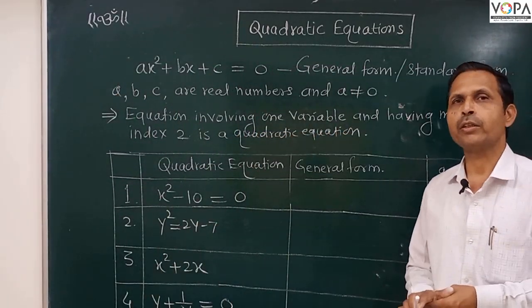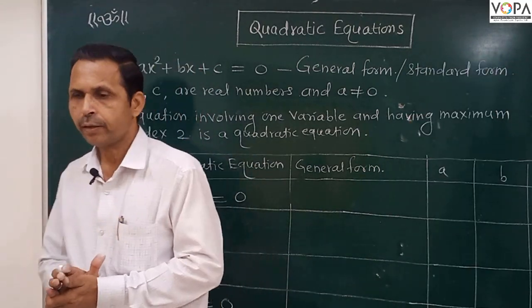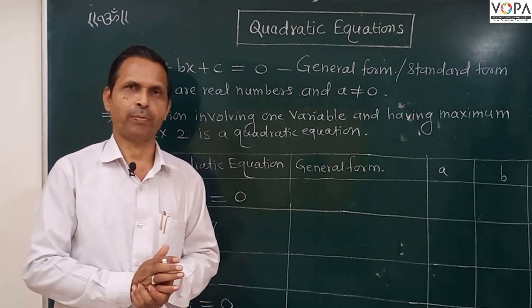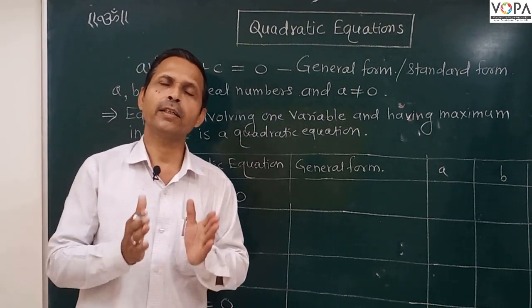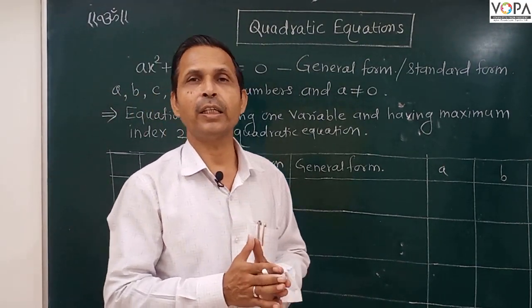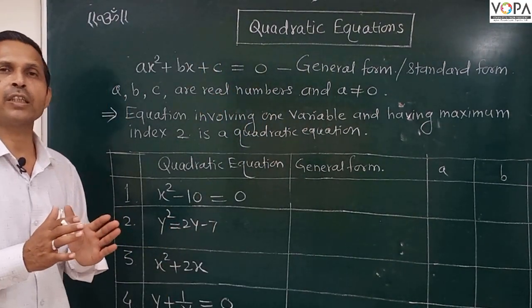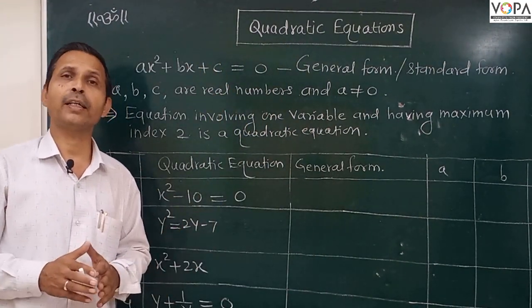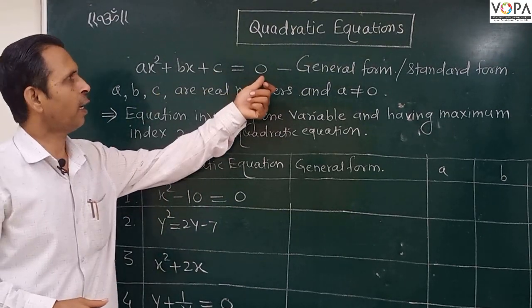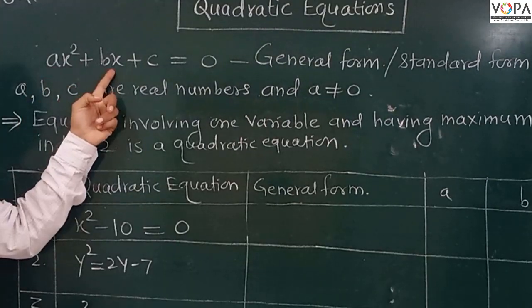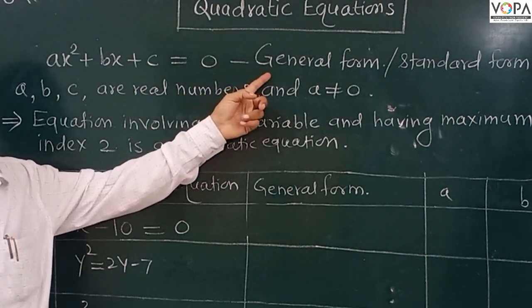What is the standard form, or general form, of a quadratic equation? And the second thing is how to write a given quadratic equation in the general form. We already know that a quadratic equation has two sides — LHS and RHS. ax² + bx + c = 0 is the general form of a quadratic equation.